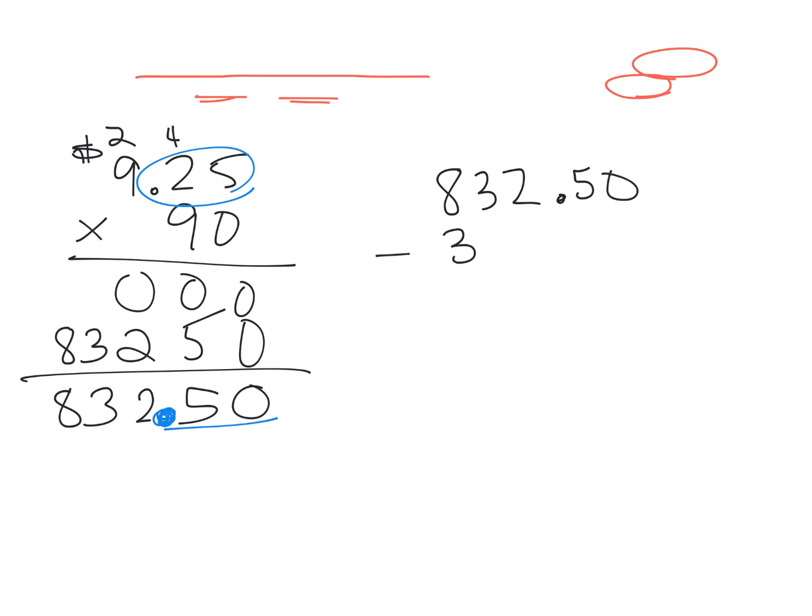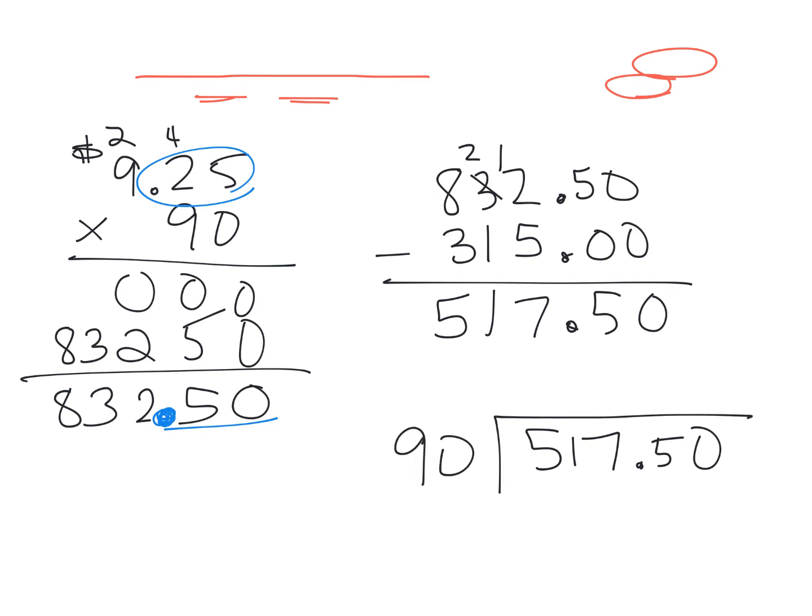But we got to take away $315. Why? Because that's admission. So now when we subtract, I'm going to do a little bit of regrouping here. We have $517.50. And that is going to be divided amongst the 90 students. And there is our division problem.